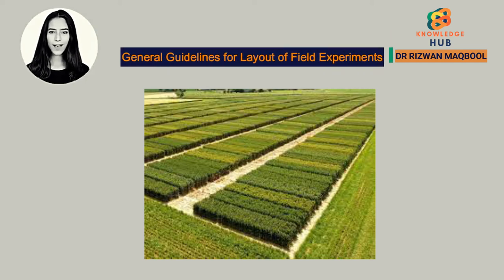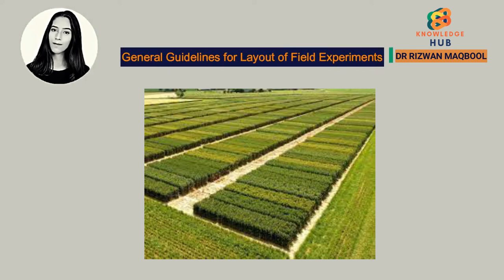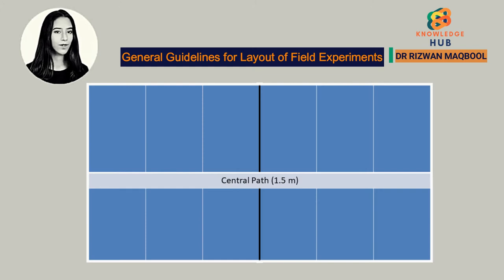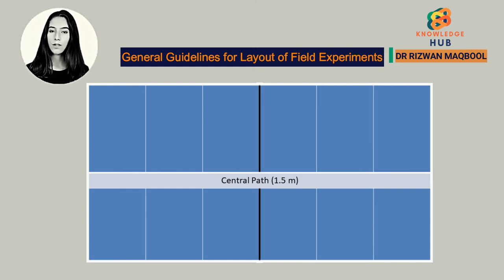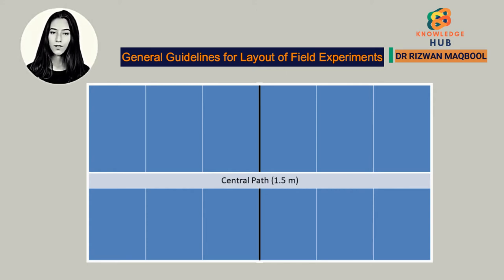General Guidelines for Layout of Field Experiments. 1. The whole field should be divided by a central path running parallel to the length of the field to have an easy approach to each plot. The width of the path should be 1.5 meter.